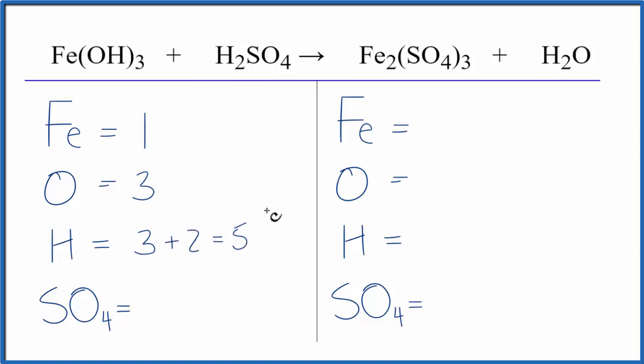Then I'll use a bit of a trick here to help us balance. This SO₄, it's called the sulfate ion, it's a polyatomic ion, and it stays together in this chemical reaction. We have SO₄ here, and we have three of them here, so I'm going to count it as just one item. So I have one sulfate ion.